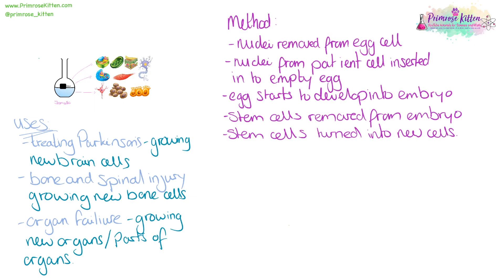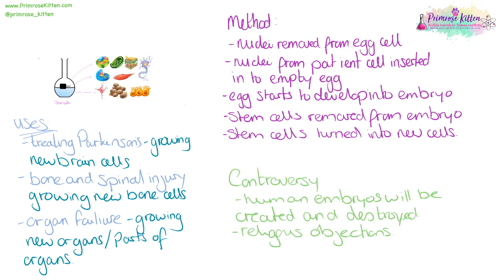If we want to make stem cells, we take the nucleus out of an egg cell, then take a nucleus from the patient's cell and insert that into the empty egg. The egg can then start to develop into an embryo. From this embryo, the stem cells are removed and turned into new cells. This does come with quite a lot of controversy because human embryos are going to be created and then destroyed, and there are lots of religious objections — people saying that life starts when embryos are created and objecting to the destruction of embryos.